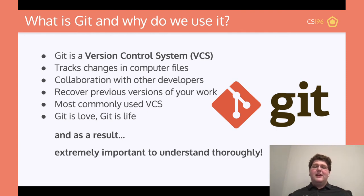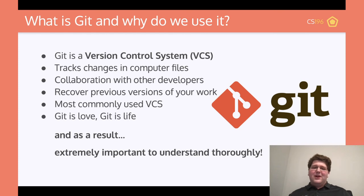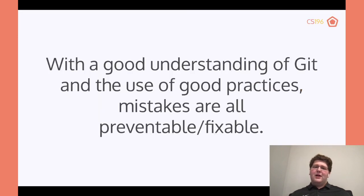Git is the most commonly used version control system because it was one of the first and everyone just kind of got used to it. Now we use it for everything — Git is love, Git is life, as I referred to earlier. It's really important for everyone aspiring to do something in software engineering to learn Git because it's so widely used throughout the industry. With a good understanding of Git and good practices, every mistake you can possibly make when writing code is fixable or even preventable.